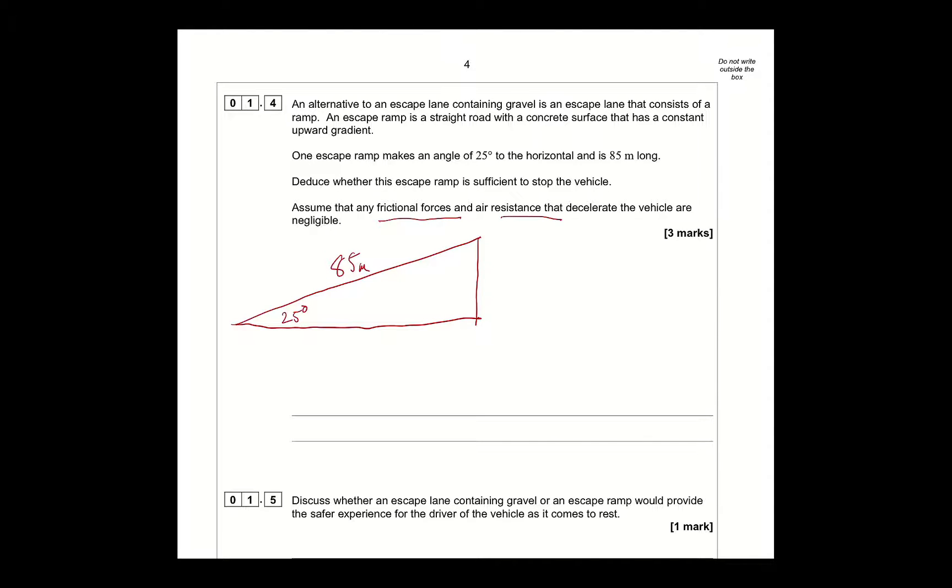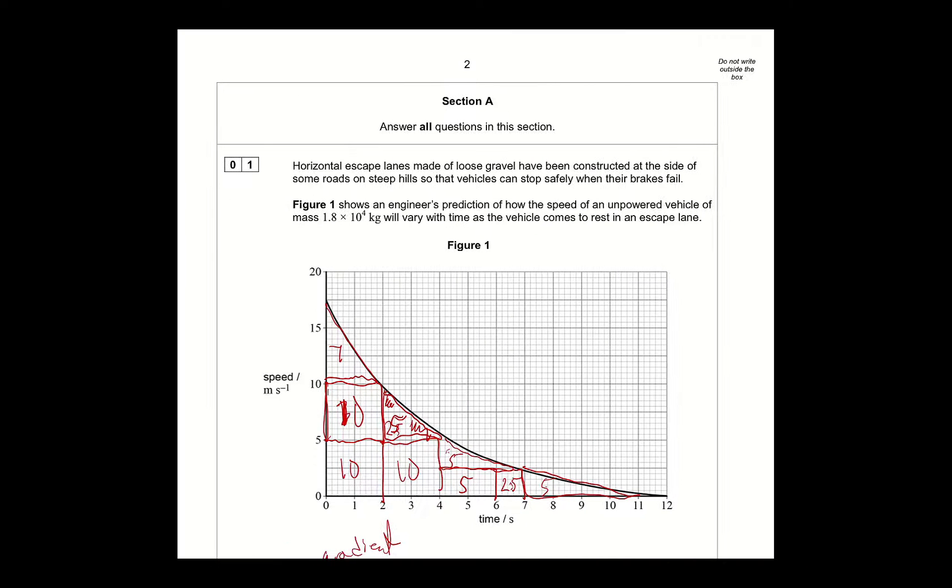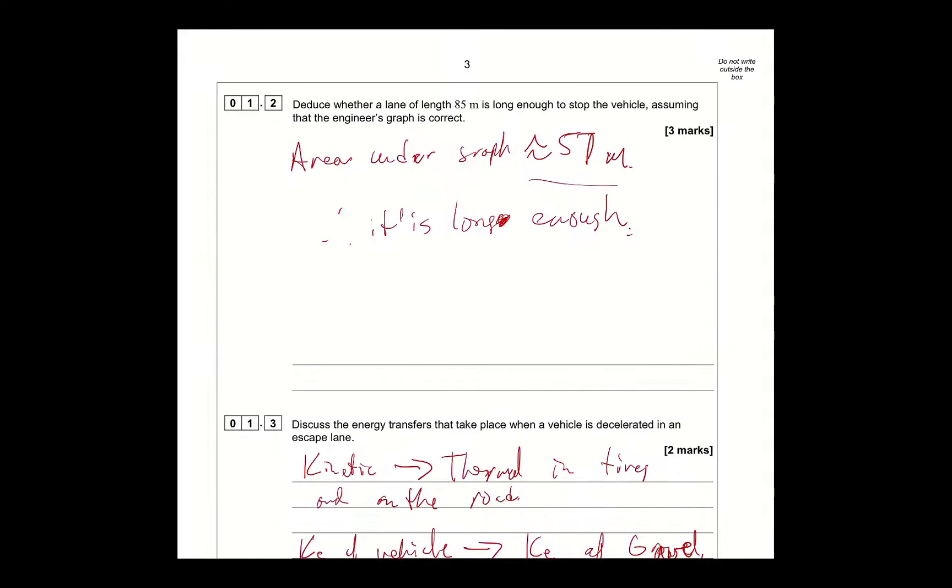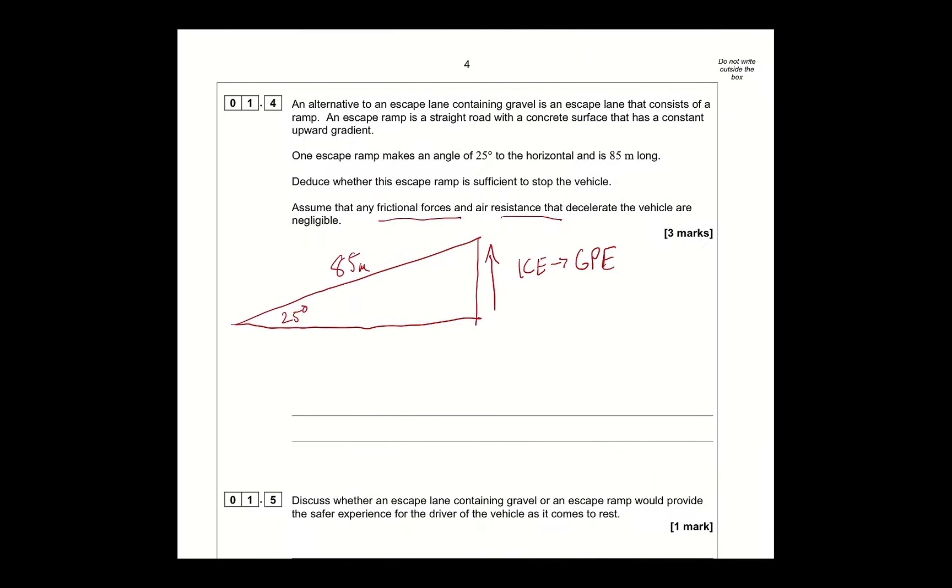So, what you have to think of is what's the energy transfer that's happening? Well, in this case, because there's no friction and air resistance decelerating it, the only thing decelerating it is the fact that it's moving up. And because it's going up, it's getting GPE. So the energy transfer is kinetic energy to gravitational potential energy. So, what we have to look at is, is this long enough to stop a vehicle with the amount of kinetic energy it has? So we have to look, and we are starting at 17.5 meters per second. Okay? So, what we have to look at is, essentially, is this a big enough raise in order for it to be zero?